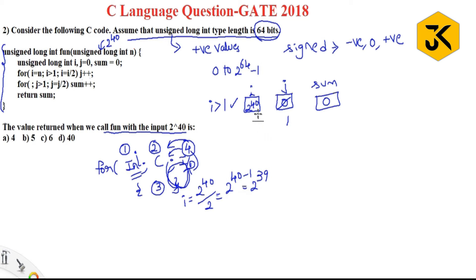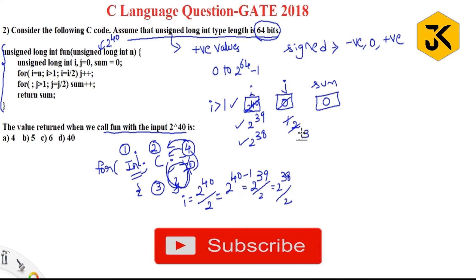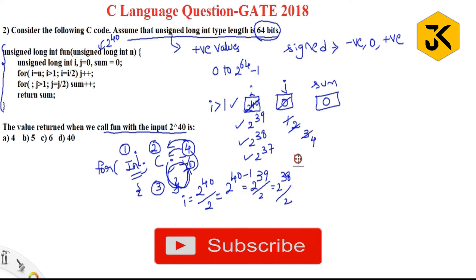Now i is 2 power 39. Is 2^39 greater than 1? Yes — j increments again. Then 2^39 divided by 2 gives 2^38. Is 2^38 greater than 1? Yes — j increments again. Then 2^38 divided by 2 gives 2^37. Is 2^37 greater than 1? Yes — increment again. This process continues.